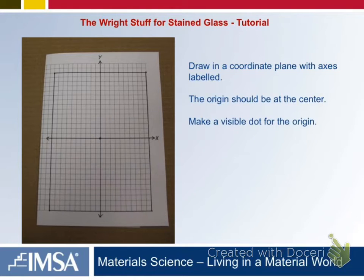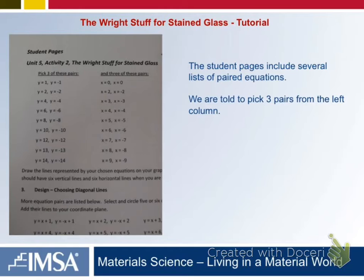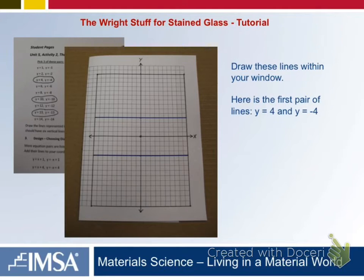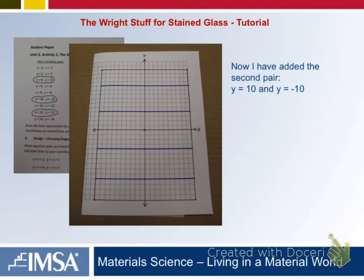You will then draw a coordinate plane right through the center, label them X and Y, and make a visible dot at the origin. On the student pages, you will be instructed to pick three pairs from the left column — these are going to make the horizontal lines, and you will draw those horizontal lines. For example, Y equals 4 and Y equals negative 4, then Y equals 10 and Y equals negative 10. You get to choose what you want them to be, so everybody's windows will be a little bit different, not only in color selections but in the lines they choose.